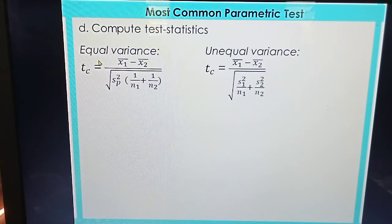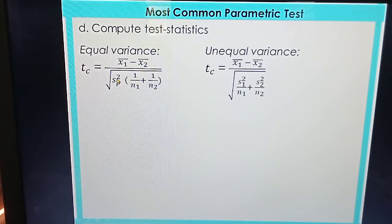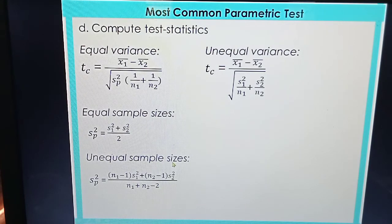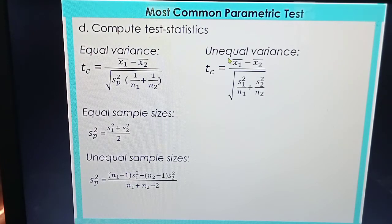The next step is to compute the test statistic. If the first step result shows equal variances, use the equal-variances formula for T computed. The values involved are the mean of the first group, the mean of the second group, and the pooled variance. The pooled variance is computed using the formula for equal sample sizes, or the other formula if the sample sizes are not equal. In the t-test for independent samples, we must be careful about the formula — consider whether variances are equal and whether sample sizes are equal.